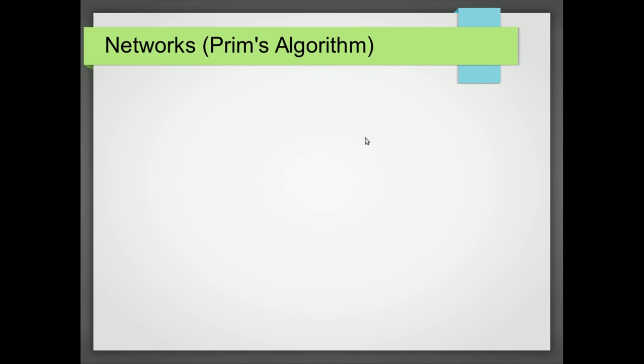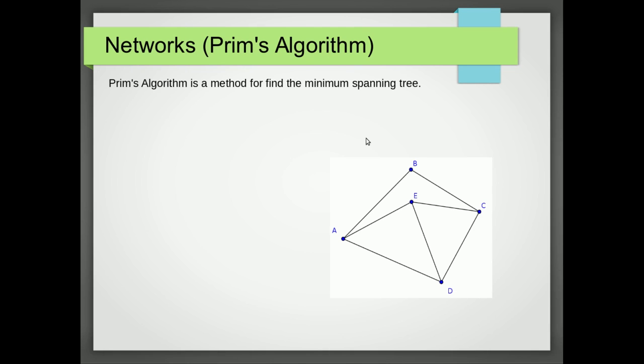In this tutorial we're going to look at Prim's algorithm. Prim's algorithm is an algorithm we use on networks. It's an algorithm that finds the minimum spanning tree. The minimum spanning tree is just the shortest network that joins all the nodes together.